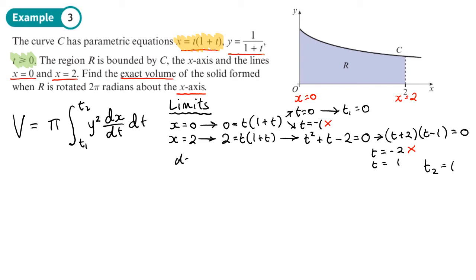Now we'll also need our dx dt. So that means differentiating. Let's write it as x equals t plus t squared. So that means that dx dt will be 2t plus 1. We're now ready to substitute everything in. So π, limits of 0 and 1, y squared, so that's the y part of the parametric equation squared. And then that needs to be times by dx dt, which is 2t plus 1 dt.